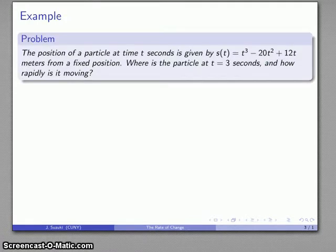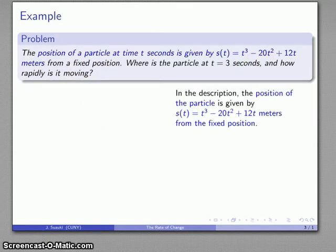For example, the position of a particle at time t is given by s(t) = t³ - 20t² + 12t meters from a fixed position. We want to find out where the particle is and how rapidly it's moving. Let's read our function carefully. The position of the particle is given by this expression and measured in meters from a fixed position.